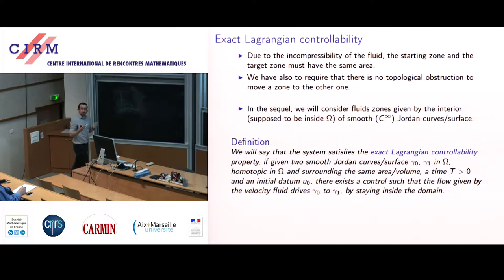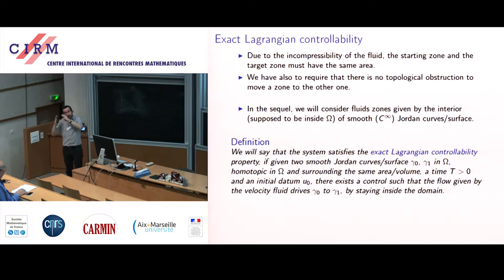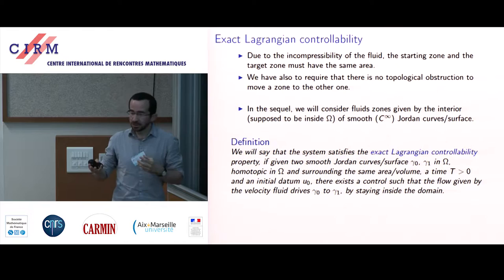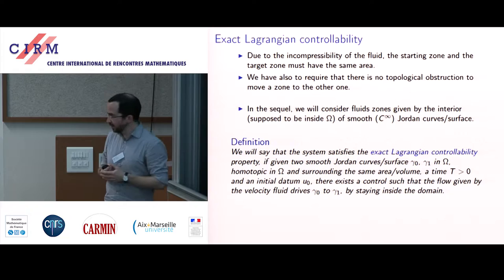You should put conditions on the initial zone and the target zone. Since we are considering the incompressible Navier-Stokes equation, the initial zone and target zone should have the same area in dimension two and the same volume in dimension three — a consequence of incompressibility and the fact that the zone does not leave the domain. There should also be no topological obstruction: you will not transform a disk into an annulus, because smooth solutions preserve the topology of the zone you transport.